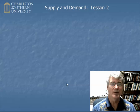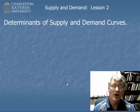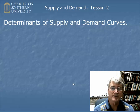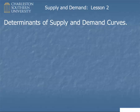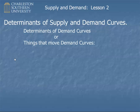Okay, so on to lesson number two: determinants of supply and demand curves. You might think of it as things that move demand curves. I've made a list here of five items, but the real list is much larger — you might find two or three more in your textbook. I'm just going to go over the major ones, but keep in mind there are others. These are all kind of obvious.